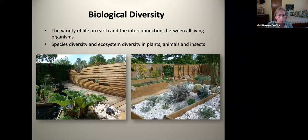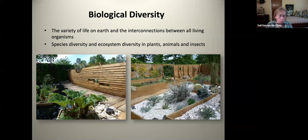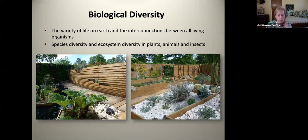Biodiversity is going to be a key component of landscapes to help us create resilient and healthy landscapes. Biodiversity is short for biological diversity, and what it refers to is the variety of life on earth and the interconnections between all living organisms. It includes both diversity between species and also diversity within an ecosystem — the diversity of plants, animals, and insects in a region, or just the difference between different species of plants.